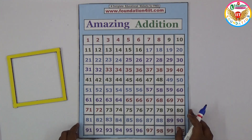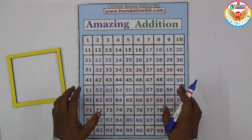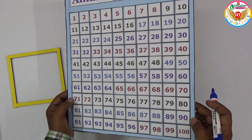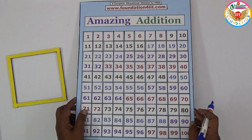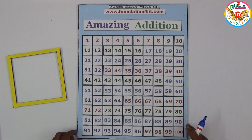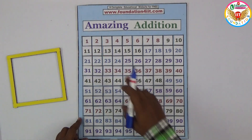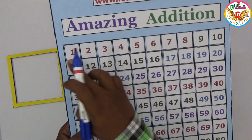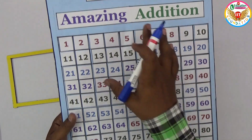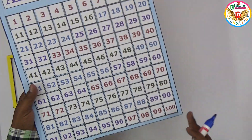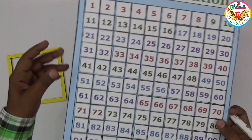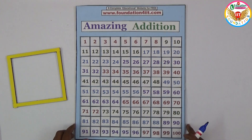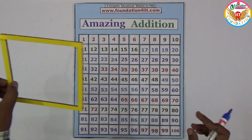Welcome to the educational channel. In this video I have shown an interesting project — an amazing addition trick based on this board. Let me show how I did this. Numbers 1 to 100 are arranged in order, 1 to 10, then 11 to 20, in proper rows and columns with equal distances maintained between them.